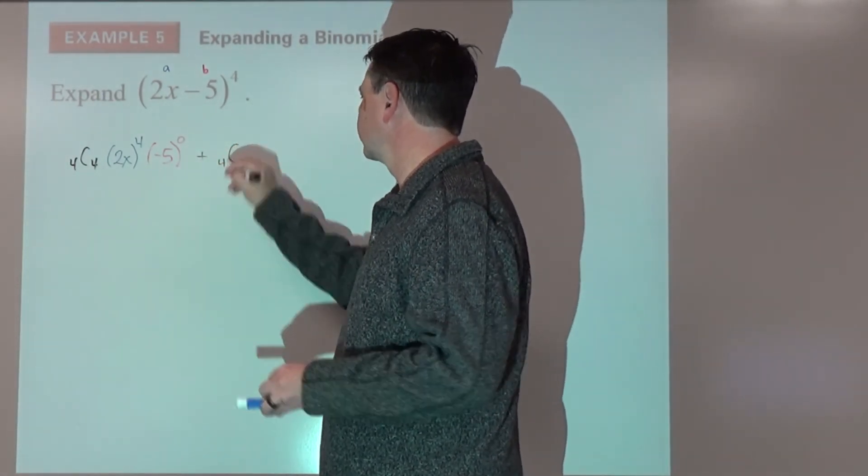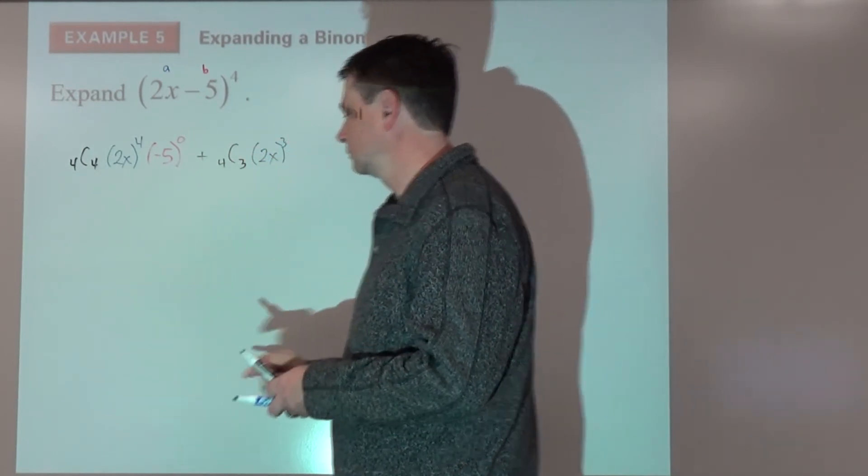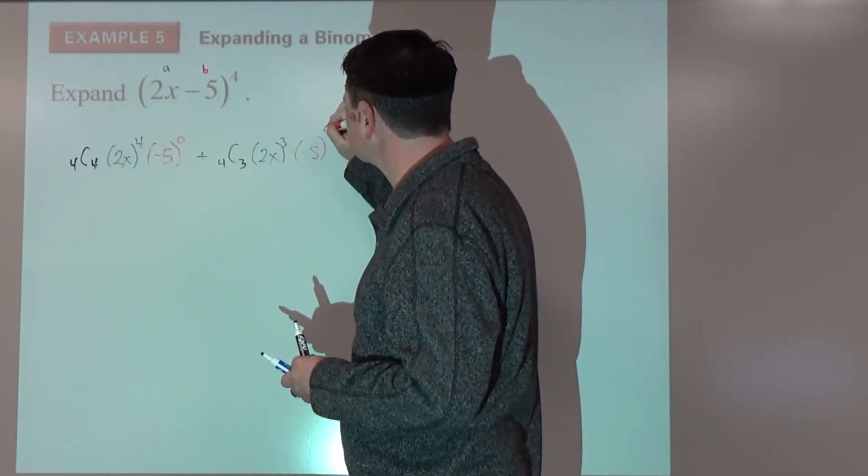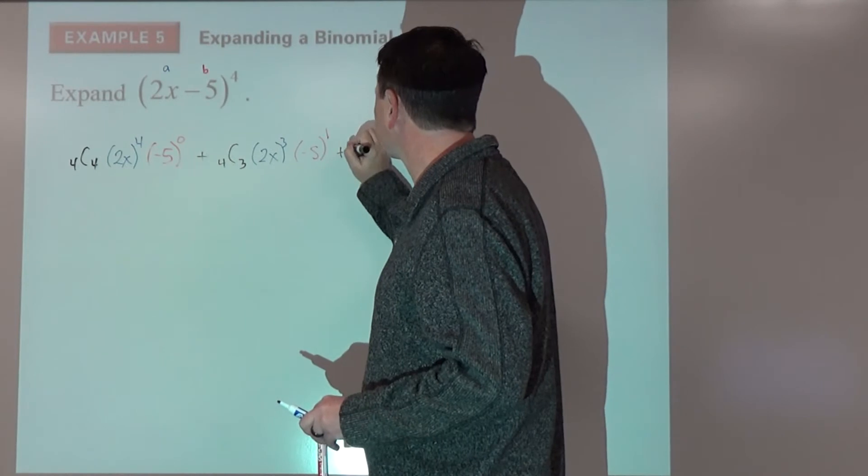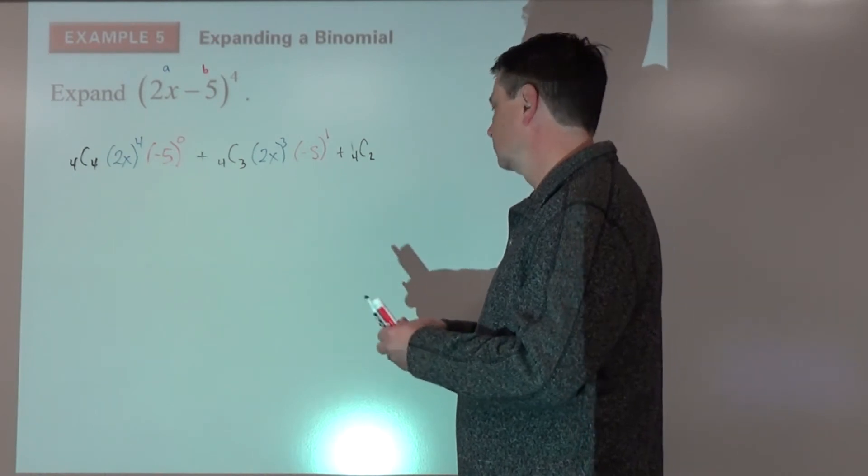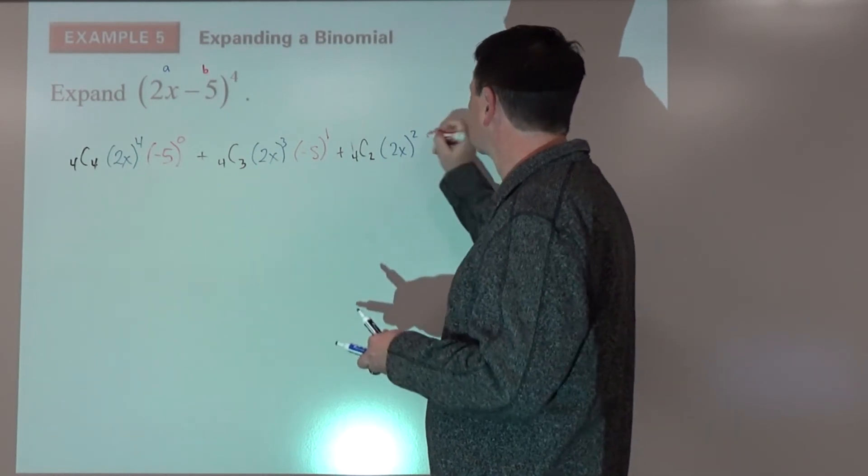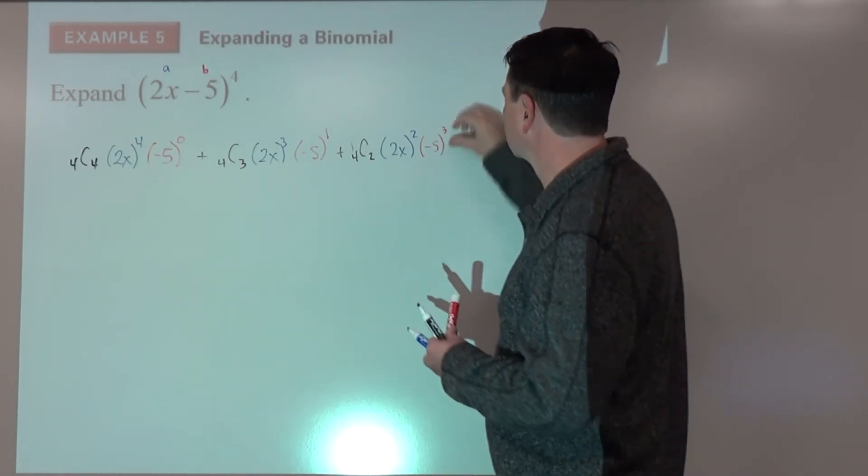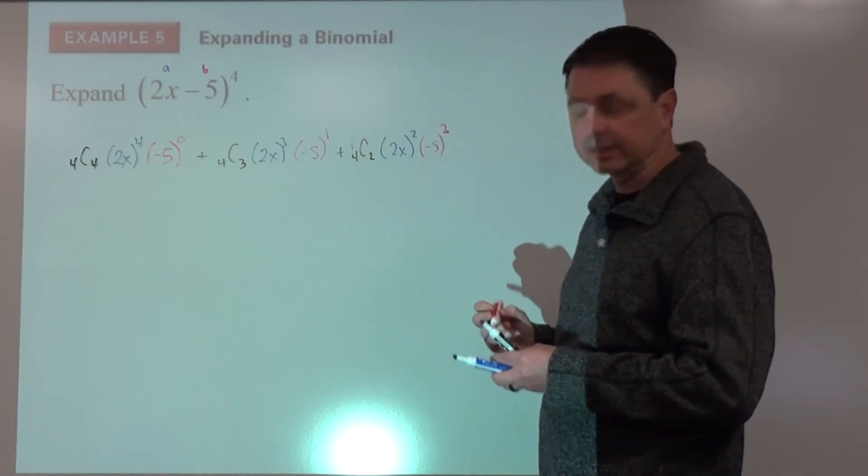Plus 4 choose 3, 2x to the third power, negative 5 to the first, plus 4 choose 2, 2x to the second, negative 5 to the second.